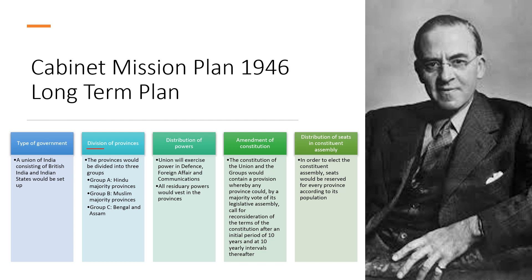Regarding how provinces would be divided, this is a very important point. The British divided provinces into three groups: Group A would consist of provinces with a Hindu majority; Group B would consist of provinces with a Muslim majority; and Group C consisted of Bengal and Assam. These were the three groups of provinces proposed by the Cabinet Mission Plan.